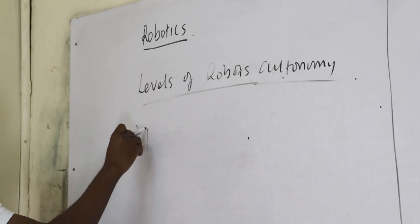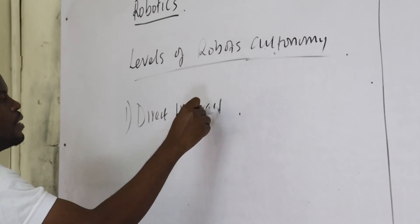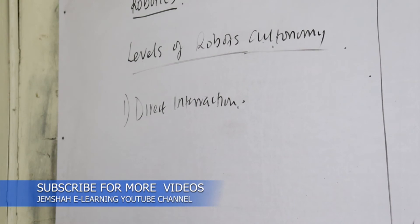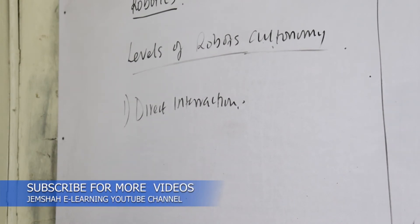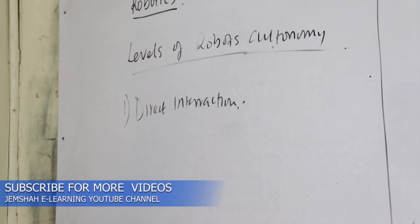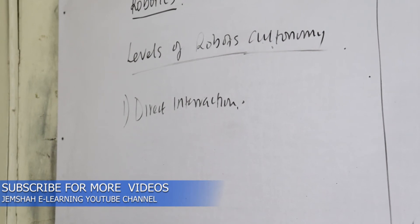The first level is direct interaction. In this case, the human being nearly has complete control over the robot. Each and every action that the robot is supposed to carry out is controlled by human beings. The robot is not in a position to carry out any activity without the help of human beings.